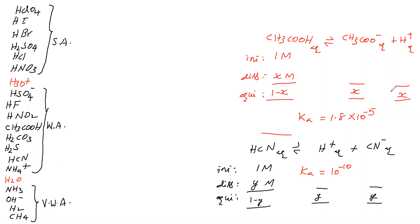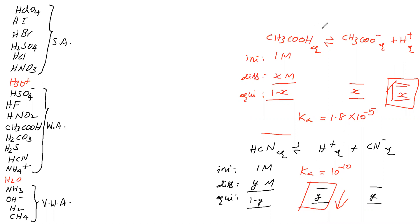Therefore comparing X and Y: X is greater than Y, meaning H⁺ concentration is higher for acetic acid and lower for HCN. Acetic acid dissociates to a greater extent and gives more H⁺, so it has higher acidic strength. HCN dissociates to a lesser extent and has lower acidic strength. Therefore acetic acid has higher acidic strength than HCN.